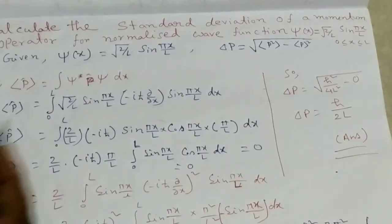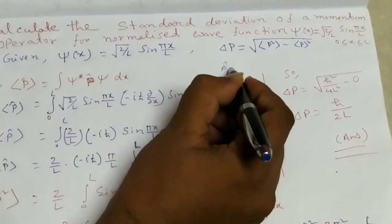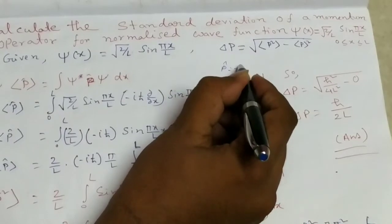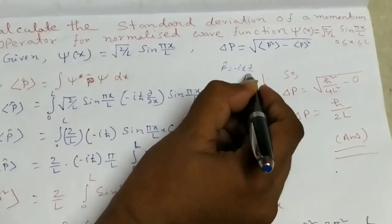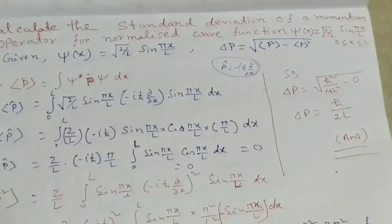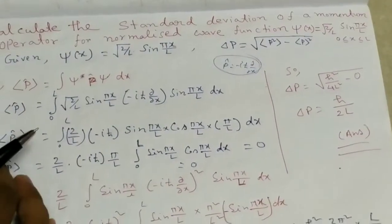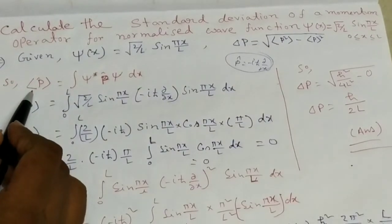We know the momentum operator p-hat equals minus i h-bar times del over del-x, which we discuss in my next lecture. So first we calculate the average value of p.